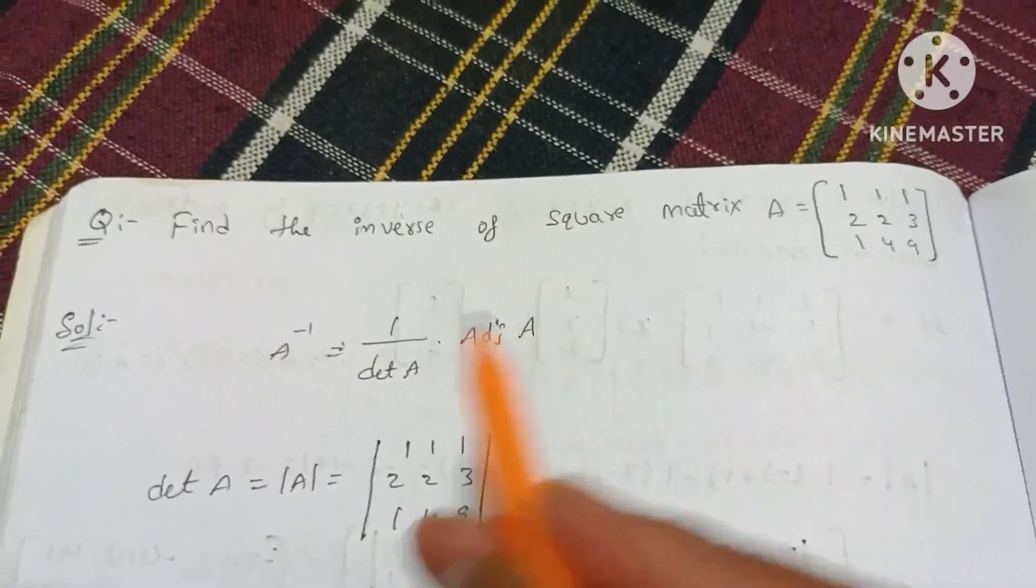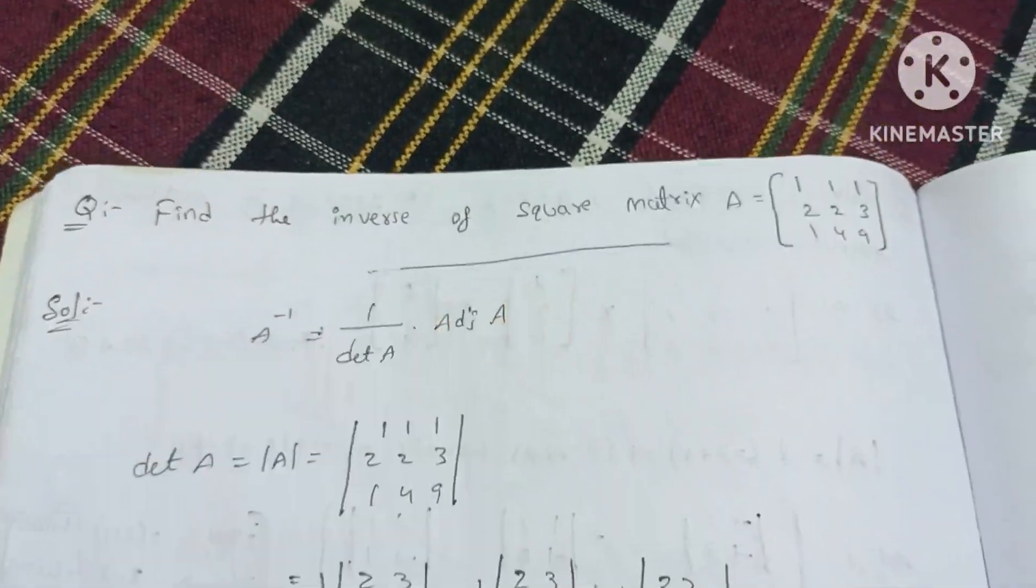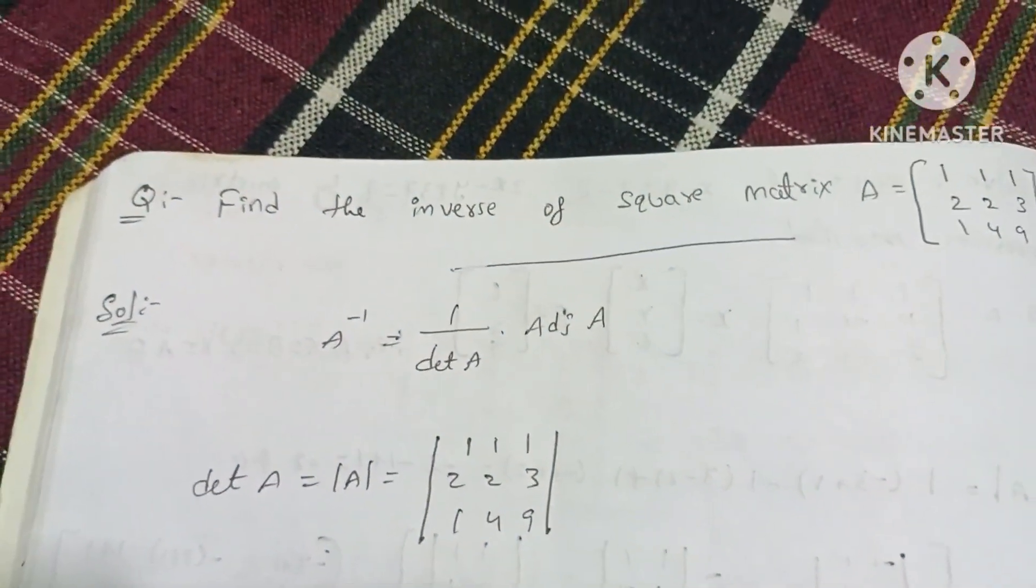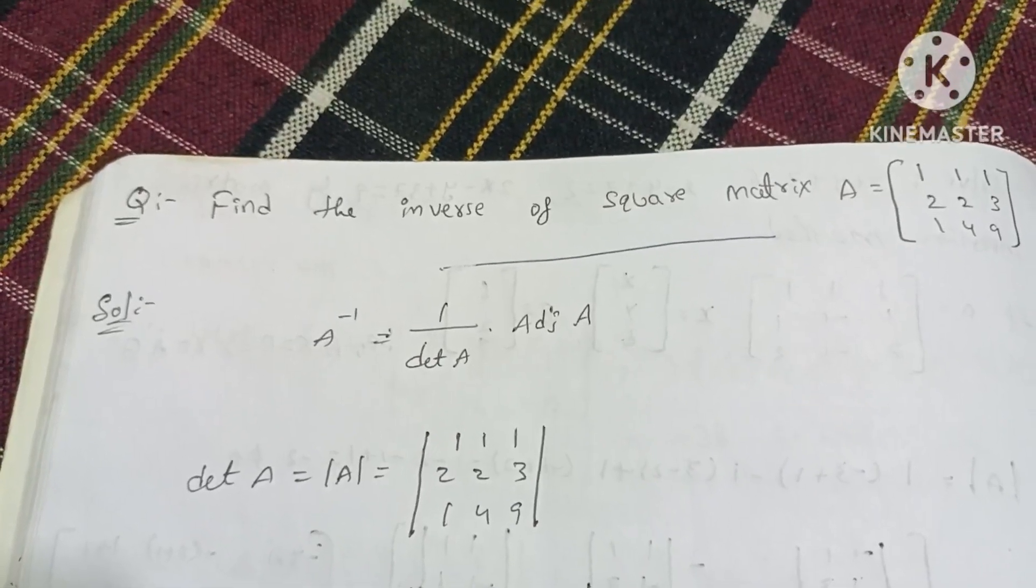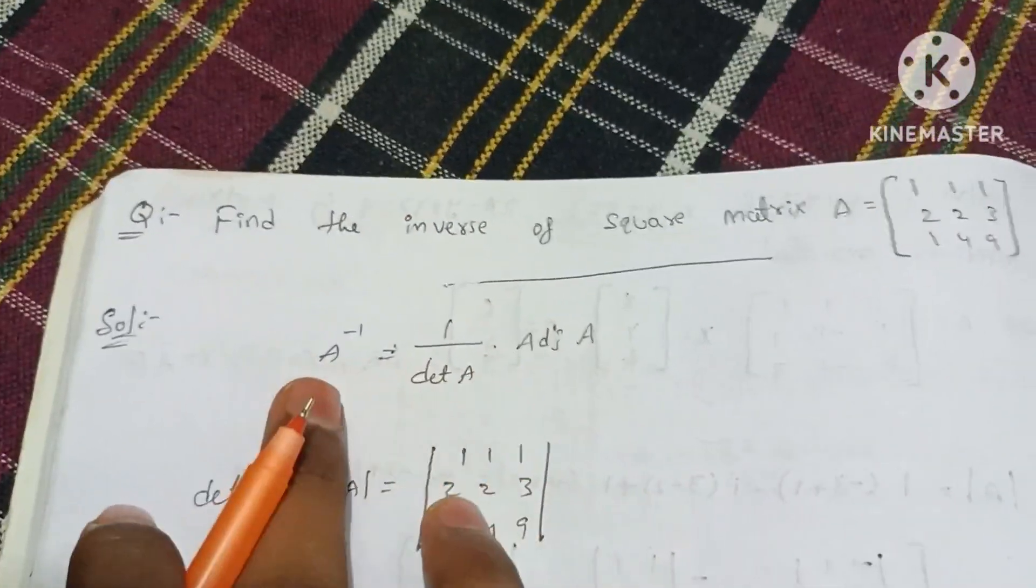If you have a matrix, you will find the inverse. You will find the inverse of square matrix. You will find the determinant and the adjoint. You will find the inverse matrix.